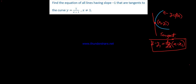Since the slope is minus 1, we set dy/dx equal to minus 1. We need to find the point x1, y1 on the curve where this condition holds.